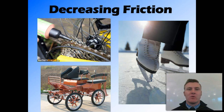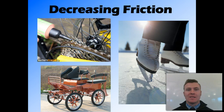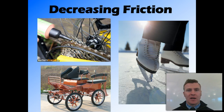In other places, we want to decrease friction. For example, in a bike — in the axle and the chain of your bike, where the parts are rubbing against each other, we want to decrease that friction as much as possible. So we use oil or lubricant to fill in the microscopic gaps and make the surfaces a bit smoother.